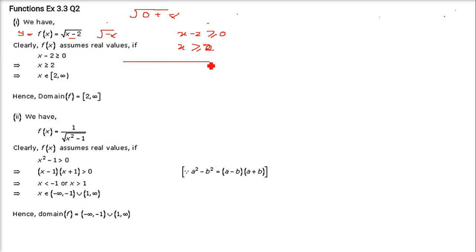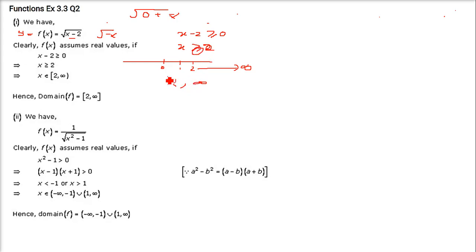So when x is greater than or equal to 2, if we make a number line — with 0, 1, 2 — anything greater than 2 is acceptable, going up to infinity. So the domain will be from 2 to infinity. This 2 is inclusive because we have an equal sign, so we put a square bracket. But for infinity, we don't know the number — it can go anywhere — so we put a round bracket.